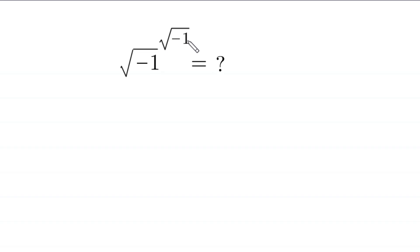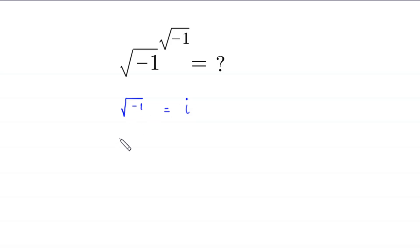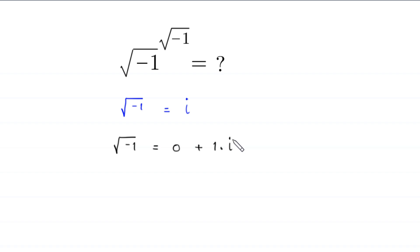We know that root negative 1 is equal to i. This root negative 1 is equal to i, and this i can be written as 0 plus 1 times i.